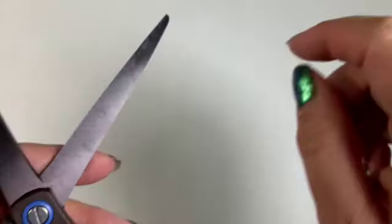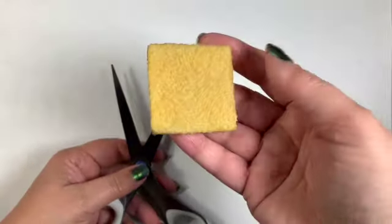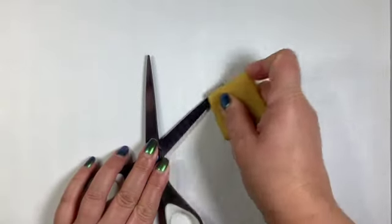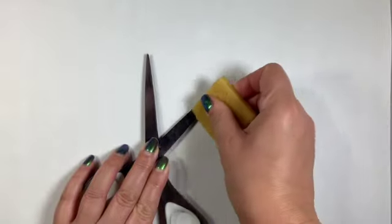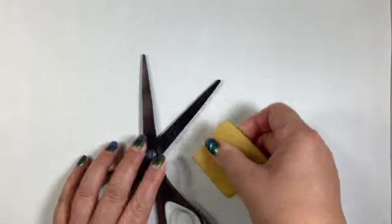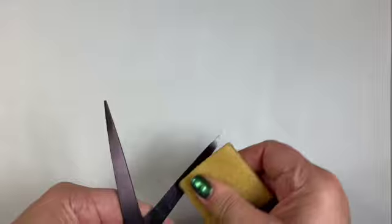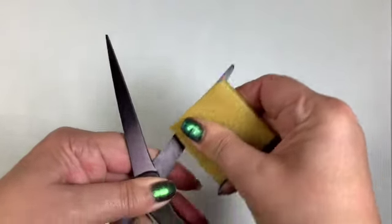You can see my scissors here are pretty dirty and they need to be cleaned. So rather than going to the sink and washing them, I'm just going to use this adhesive eraser to remove all of that gunk on my scissors. You want to be careful when you're doing this and definitely put the scissors facing away from you and scrape it so you don't accidentally cut your adhesive eraser like I'm doing here.